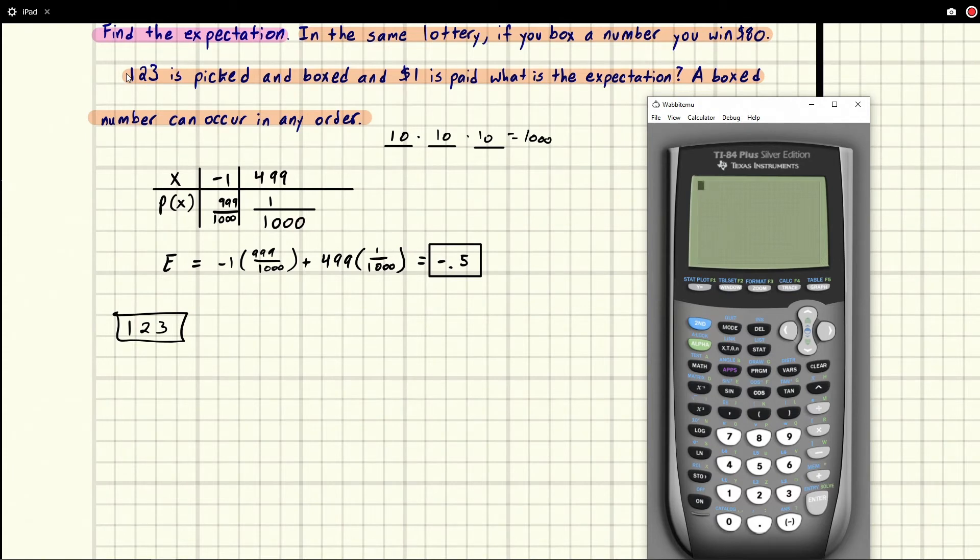Well, if we look at this, okay, so we say any order these can occur in. So 321 is a winner. 132 is a winner on and on and on. So how many ways can we win? That's what we're concerned with, right? Because we already know there's 1000 possible numbers. But this is going to change the number of ways we can win, not the number of numbers we can make.